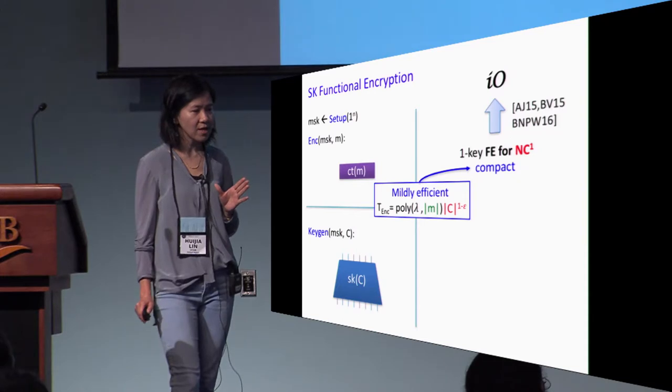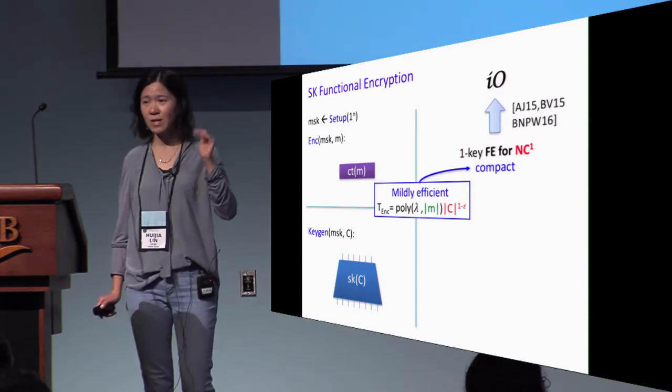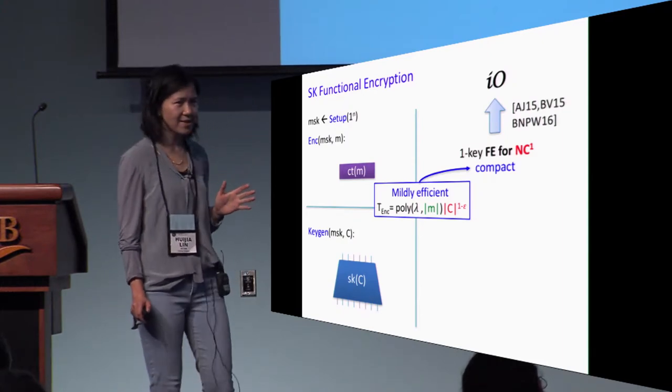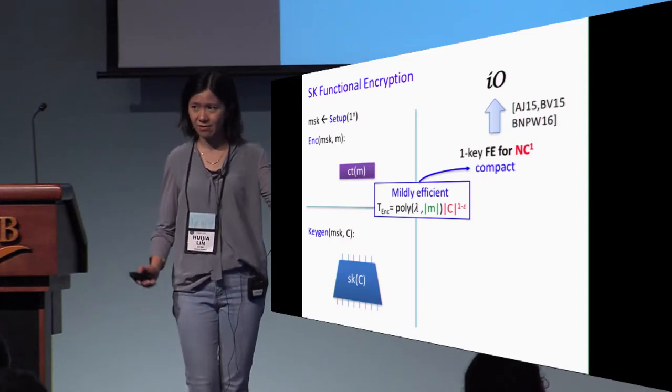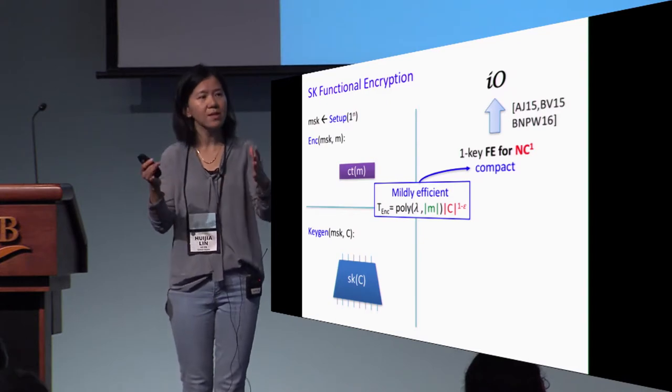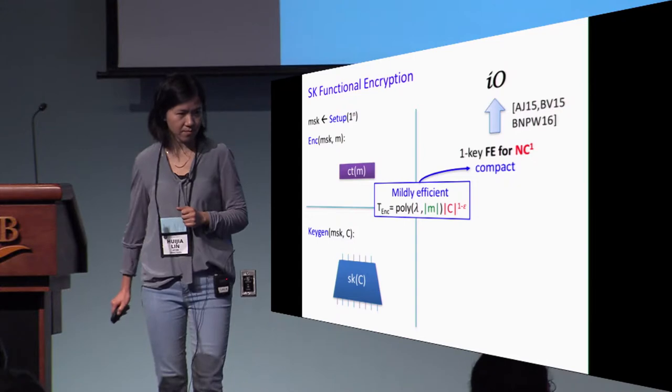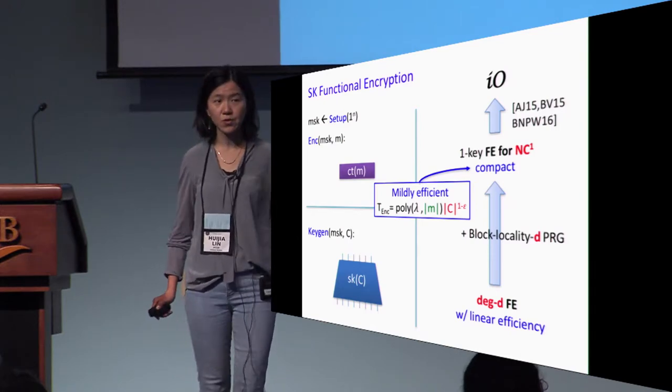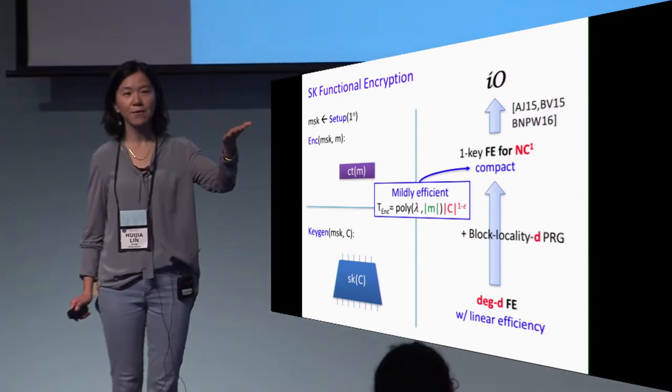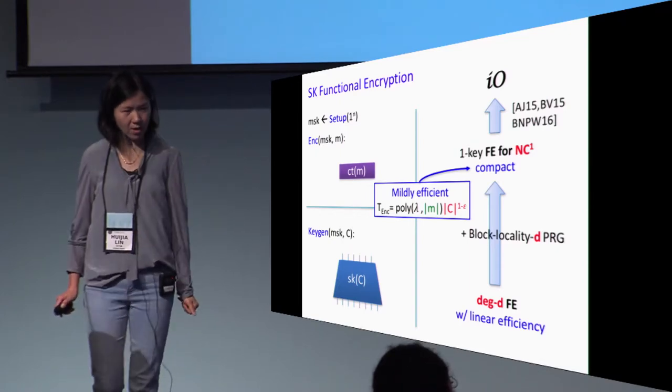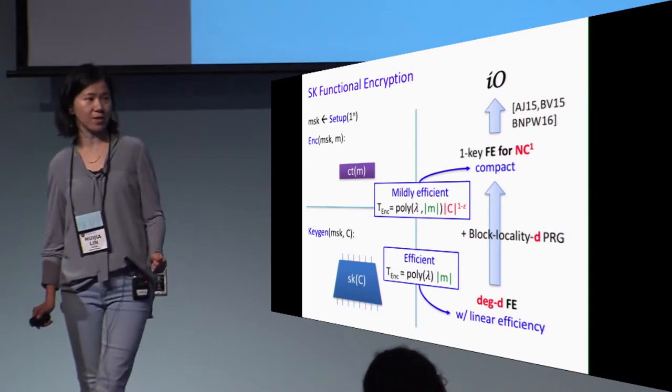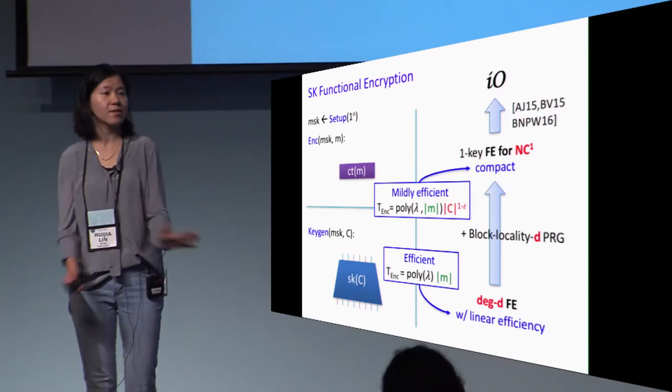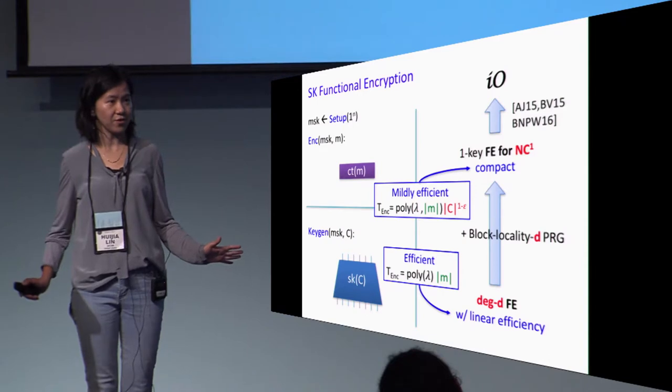It turns out that functional encryption is intimately connected with IO. As shown by three elegant works, give me one-key functional encryption for the class of NC1 functions. As long as it's compact, we can already construct IO. Here, compact means that this FE scheme should be mildly efficient. That is, the encryption algorithm runs in time polynomial in the message length, which is necessary, but also somehow sublinearly in the size of the function to be computed. Therefore, we really just need to do bootstrapping of FE scheme to go from degree D FE to FE for computing NC1 functions. Here we need the degree D FE to have really, really good efficiency. That is, the encryption algorithm runs just linearly in the length of the message and completely independent of the size of the function.